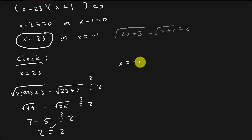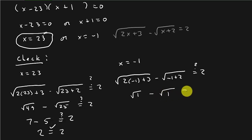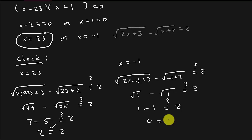Now checking x equals negative 1: square root of 2 times negative 1 plus 3 minus square root of negative 1 plus 2 equals square root of 1 minus square root of 1, which is 1 minus 1, which equals 0. That does not equal 2, so 0 equals 2 is false. Therefore x equals negative 1 is not a solution. And there you have it — I hope you enjoyed that video, check out my other videos.